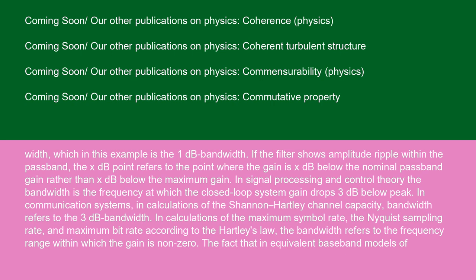In signal processing and control theory, the bandwidth is the frequency at which the closed-loop system gain drops 3 dB below peak. In communication systems, in calculations of the Shannon-Hartley Channel Capacity, bandwidth refers to the 3 dB bandwidth. In calculations of the maximum symbol rate, the Nyquist sampling rate, and maximum bit rate according to the Hartley's Law, the bandwidth refers to the frequency range within which the gain is non-zero.